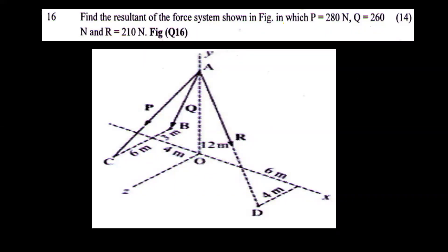Find the resultant of the force system shown in the figure, in which P is equal to 280 Newton, Q is equal to 260 Newton, and R is equal to 210 Newton. The resultant of the force system — the resultant of force will be determined, and the direction of force will be found using the unit vector from the position vectors.